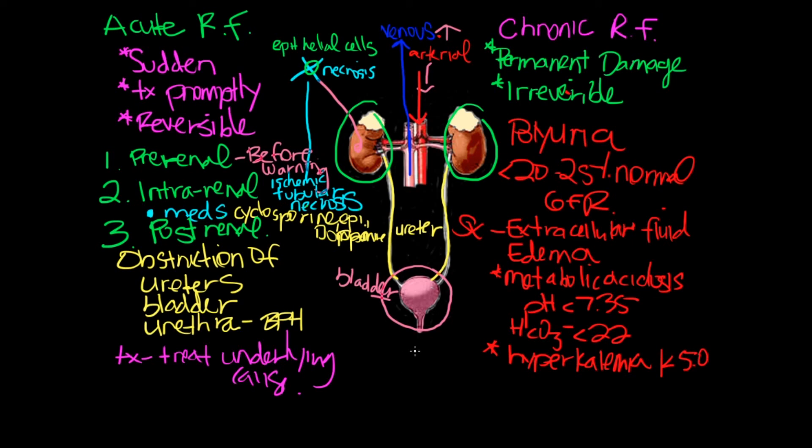With end-stage renal disease, I'm going to write here. So end-stage renal disease, your GFR is less than 5% of normal. And so above here, this is renal disease that I was talking about regarding your GFR. And so with end-stage renal disease, your GFR is less than 5% of normal. So you're having atrophy within your GFR, fibrosis.